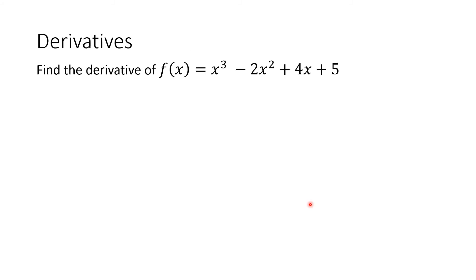Let us now proceed with finding the derivative of a polynomial. Find the derivative of f(x) = x cubed minus 2x squared plus 4x plus 5. As you can see, we have a polynomial function with 4 terms. To get the derivative of the polynomial, it is the same as getting the derivative of each term — the derivative of x cubed, then 2x squared, then 4x, and then the constant 5 — using the same operations.